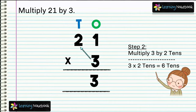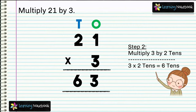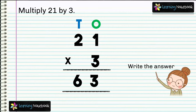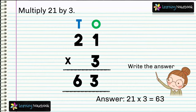Step two: multiply 3 by 2 tens — 3 into 2 tens equals 6 tens — so we write 6 at the tens place in the answer. The answer is 21 into 3 equals 63 students. This is an example of multiplication without regrouping. Later in this video we will see how to do multiplication with regrouping.